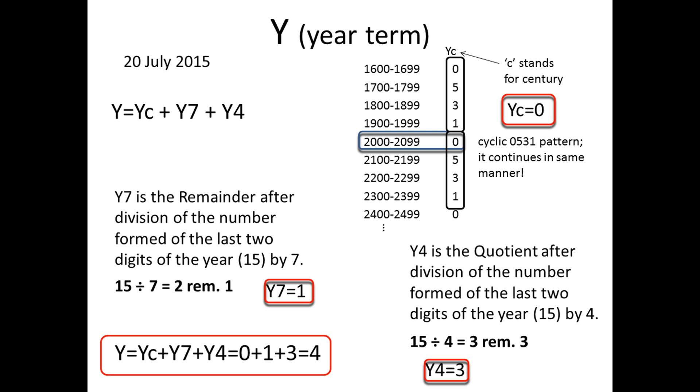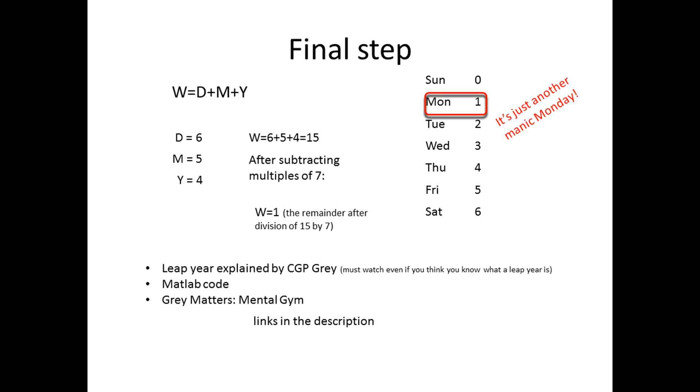Having all the terms, the year term Y is now equal to 0 plus 1 plus 3 equals 4. Now the day term, month term and year term are known, and you only have to add them up.